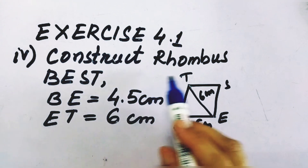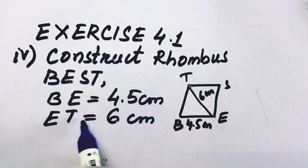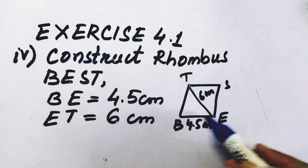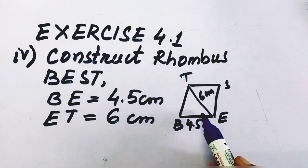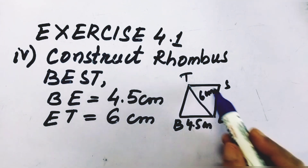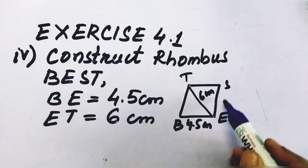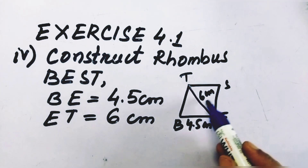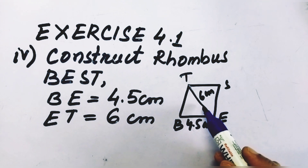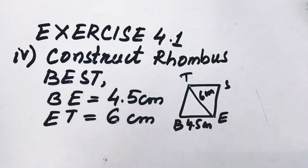Now let us construct rhombus BEST, where BE = 4.5 cm and ET = 6 cm. This is the rough sketch. Since a rhombus is a special quadrilateral, all four sides are equal, so one side being given is enough. That means all four sides are 4.5 cm and one diagonal ET = 6 cm. Using criterion 1 — all four sides and one diagonal given — we can construct the rhombus.